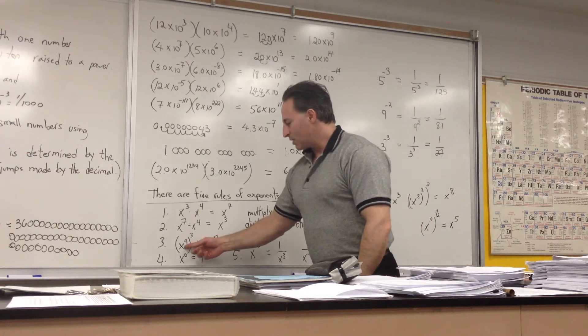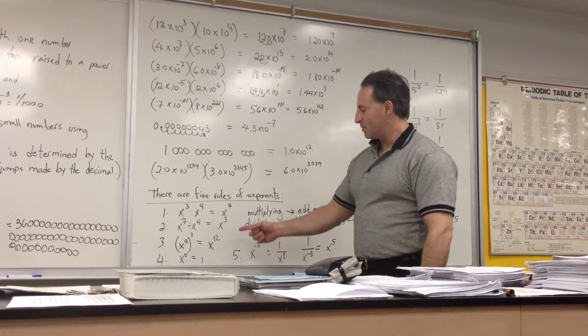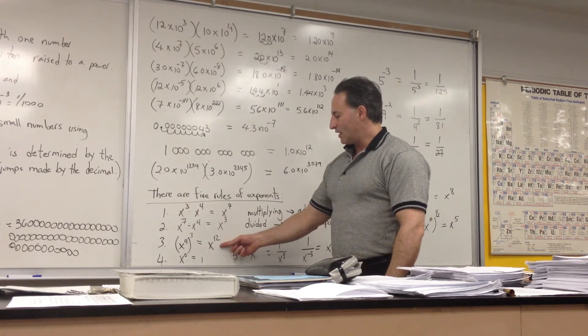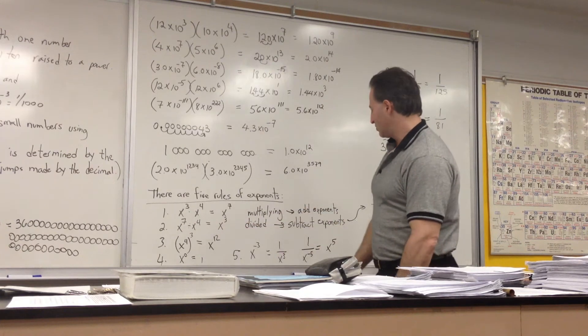If you raise an exponential number to an exponential power, then you multiply the two exponents that the number is being raised by to give the actual value. x to the 4 raised to the power of 3 is equal to x to the 12.